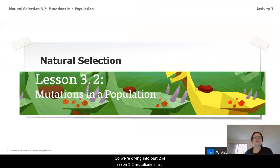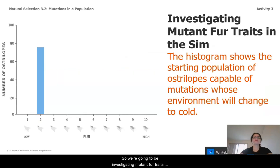So, we're diving into Part 2 of Lesson 3.2, Mutations in a Population, and we're going to be starting up with Activity 3. So, we're going to be investigating mutant fur traits in the sim, and this population here is a starting population of ostrilopes who are going to be able to mutate, and their environment will change to cold.